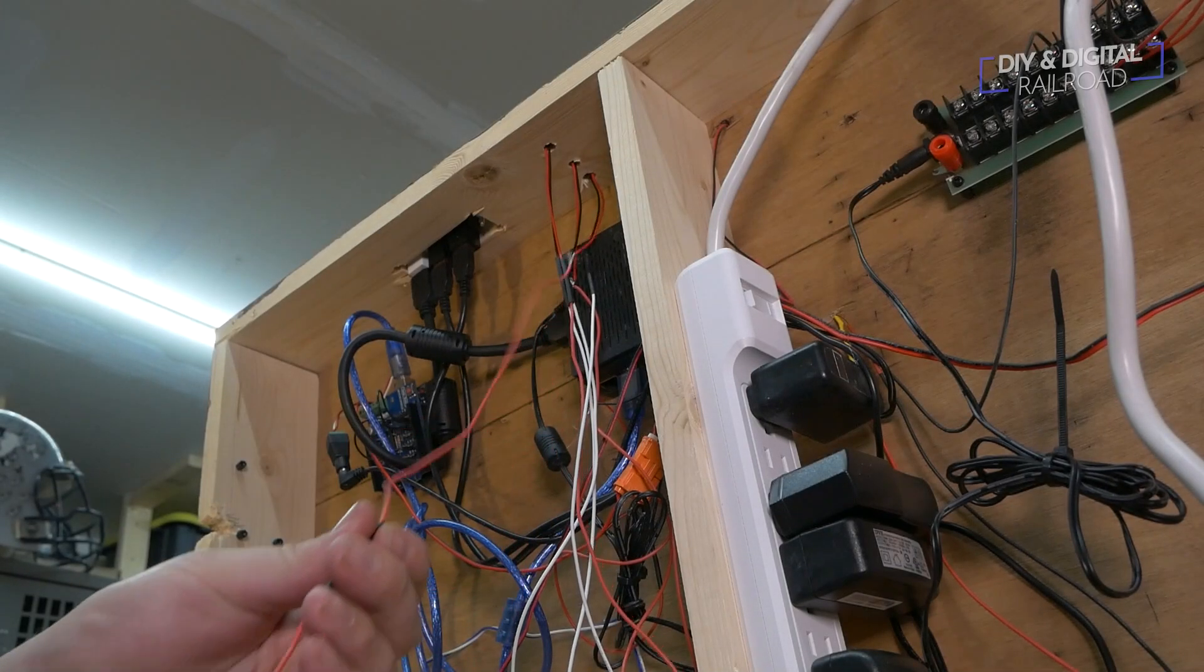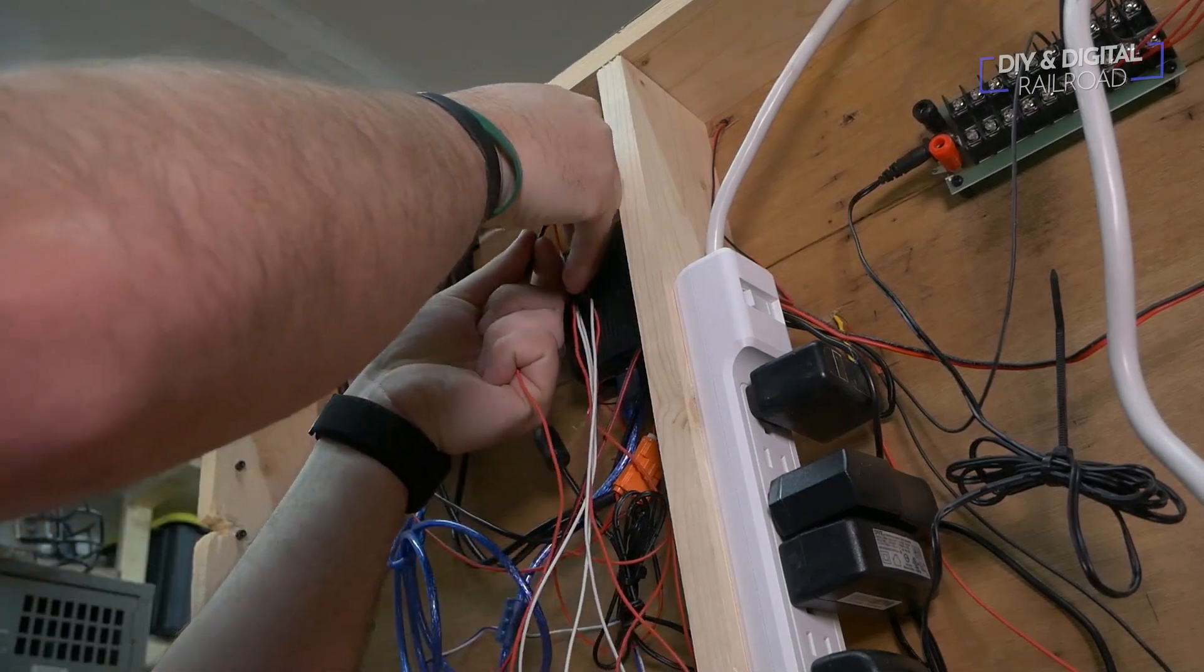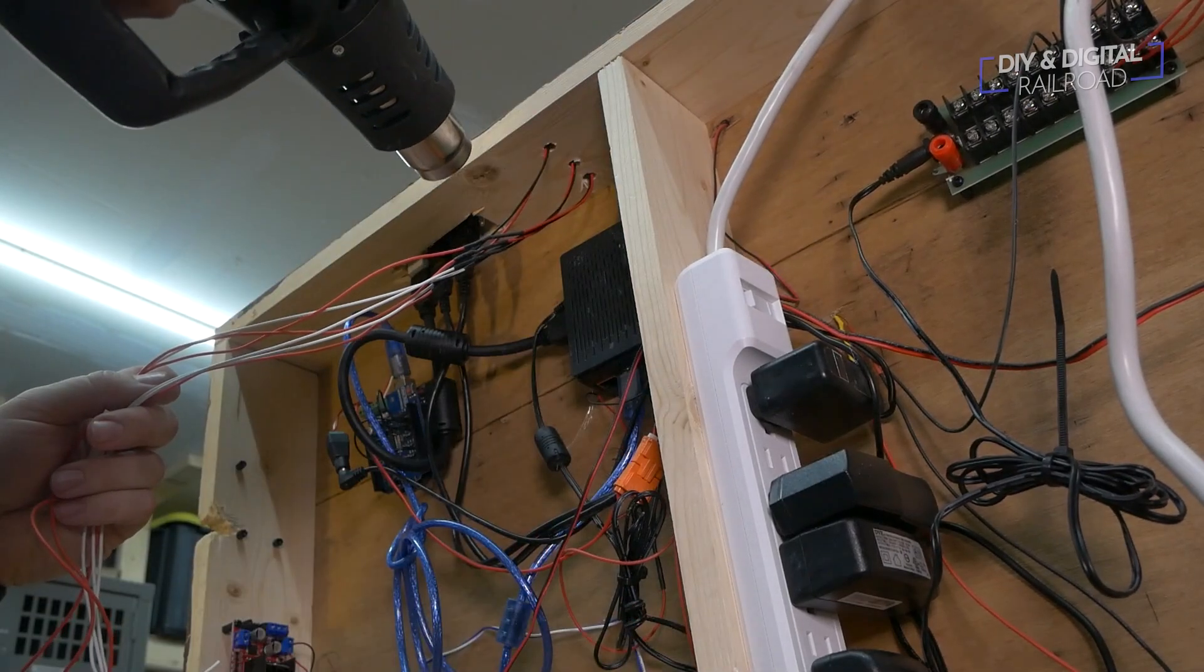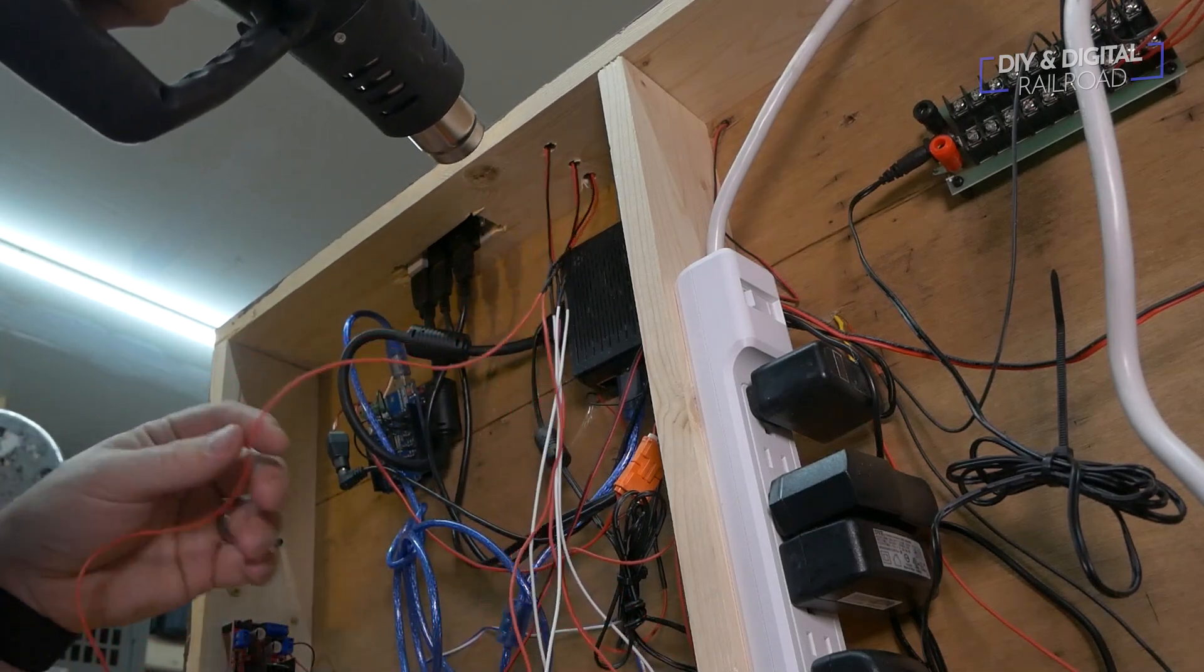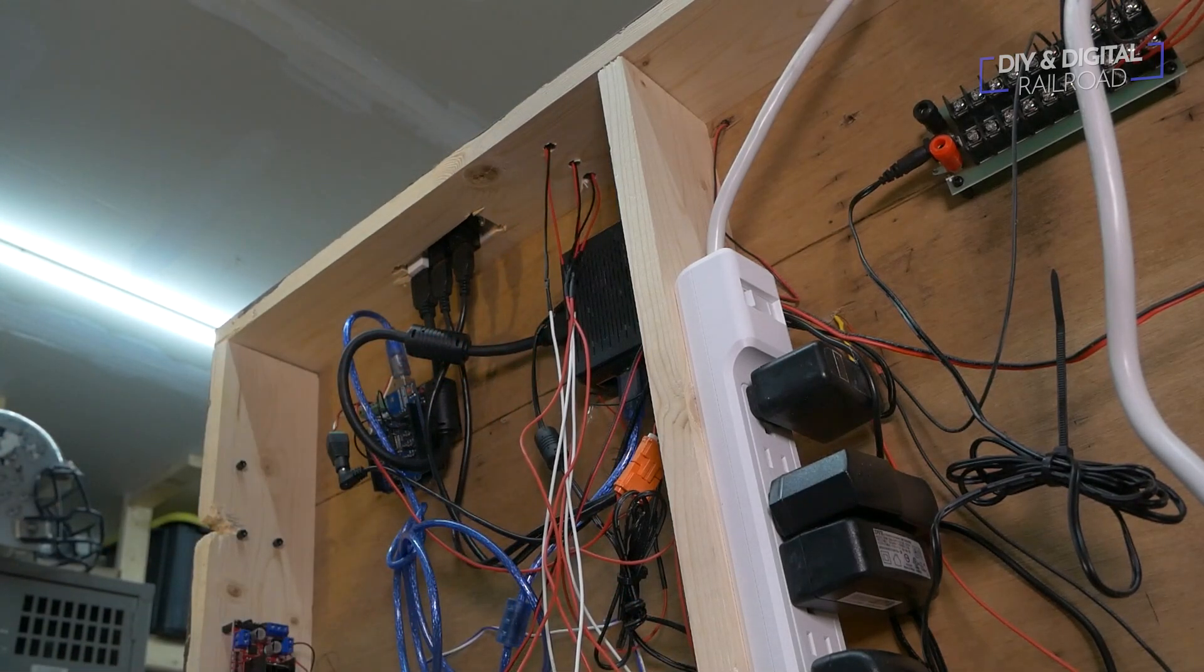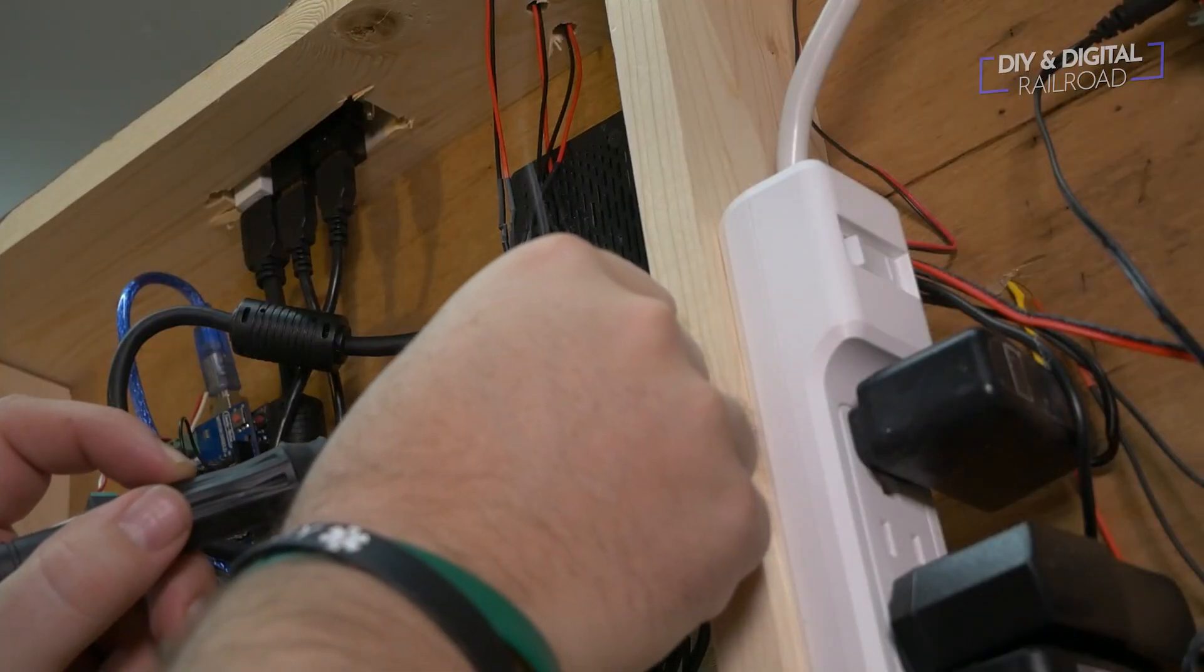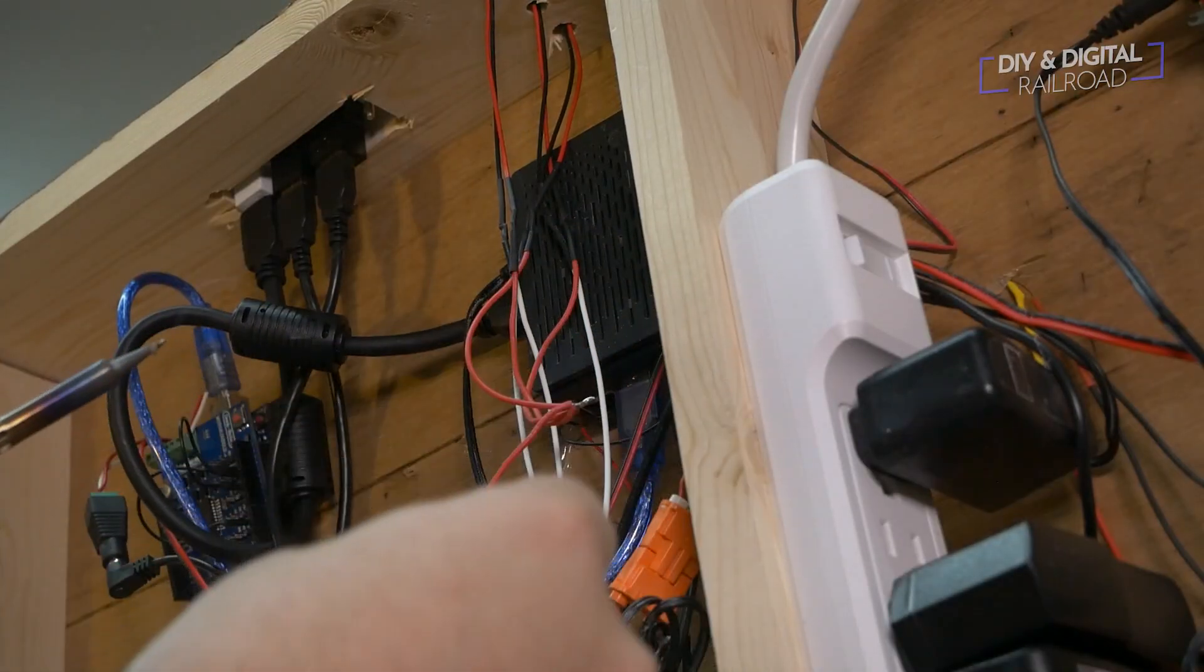Now, before I begin installing and connecting up the Arduino, I put some heat shrink on the wires and the solder points. The reason that I waited for this was because it was easier to thread the wires through without the heat shrink on them. I grouped the 5-volt wires together into a single wire and solder them.